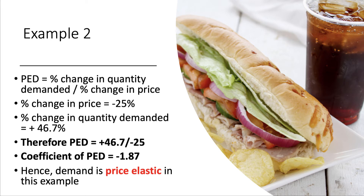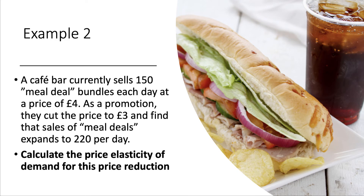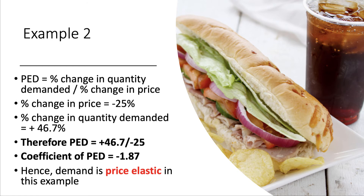The price has fallen from £4 to £3 — that's a 25% fall in price. In terms of quantity demanded, the change from 150 to 220 is a change of 70 over the original 150, which is plus 46.7%. So it's plus 46.7 divided by minus 25, giving a coefficient of minus 1.87. That's more than one, so demand is price elastic. It looks like customers are sensitive to the price of a meal deal — word gets around and people flock to get the £3 deal.